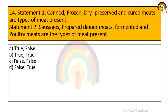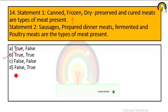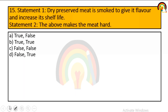Can frozen, dry preserved, and cured meat be types of meat present? True. Prepared dinner meat, fermented meat, and poultry meat are also types of meat present? Both statements are true, so option B is correct. Dry preserved meat is smoked to give it flavor and increase its shelf life — true. The above process also makes the meat hard — also true. So both statements are true.